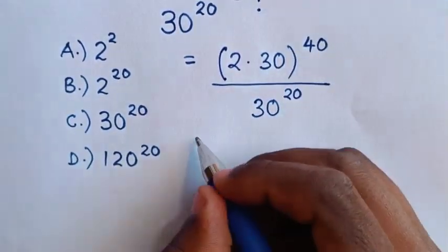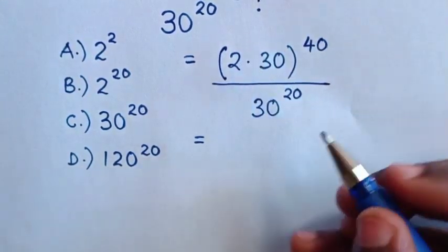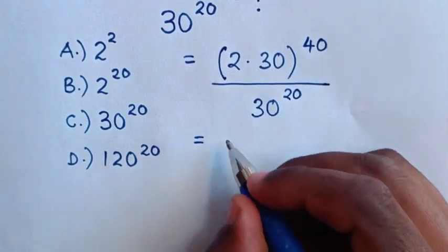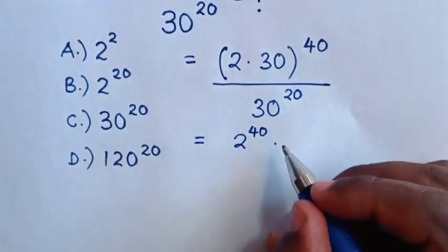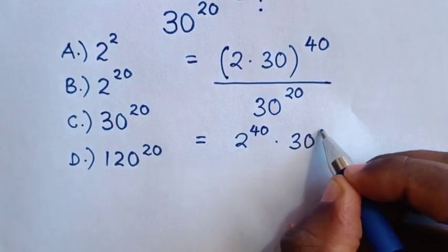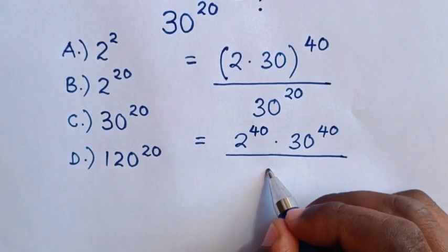Then, this will be equal to, for this power of 40, we multiply inside the bracket. So, it will be 2 power of 40 times 30 power of 40, then over this 30 power of 20.